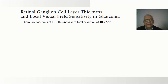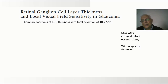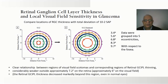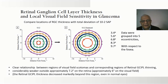When they compare the location of the retinal ganglion cell thickness with the total deviation of the visual field, data were grouped into fine eccentric locations on specific degrees. A clear relationship between regions of visual field scotoma and the corresponding region of the retinal ganglion cell was found. A considerably weaker relation was found outside 7.2 degrees. They also found that the retinal ganglion cell inner plexiform layer thickness decreased markedly beyond this region, therefore they consider the central 8 degrees for their model.